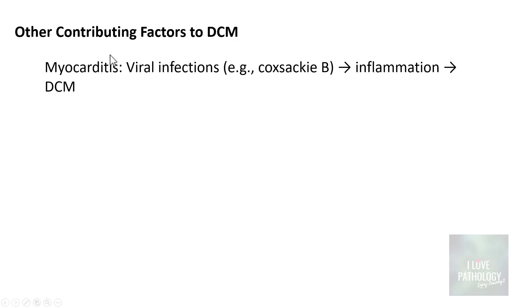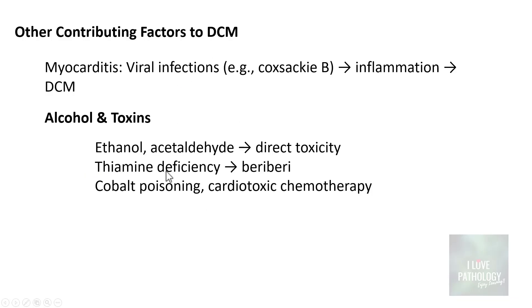Other causes of dilated cardiomyopathy include myocarditis — particularly Coxsackie virus B infections — which result in inflammation leading to dilated cardiomyopathy. Alcohol and toxins, particularly ethanol or acetaldehyde, cause direct toxicity. Thiamine deficiency resulting in beriberi, and poisoning with cobalt or cardiotoxic chemotherapy can also result in dilated cardiomyopathy.